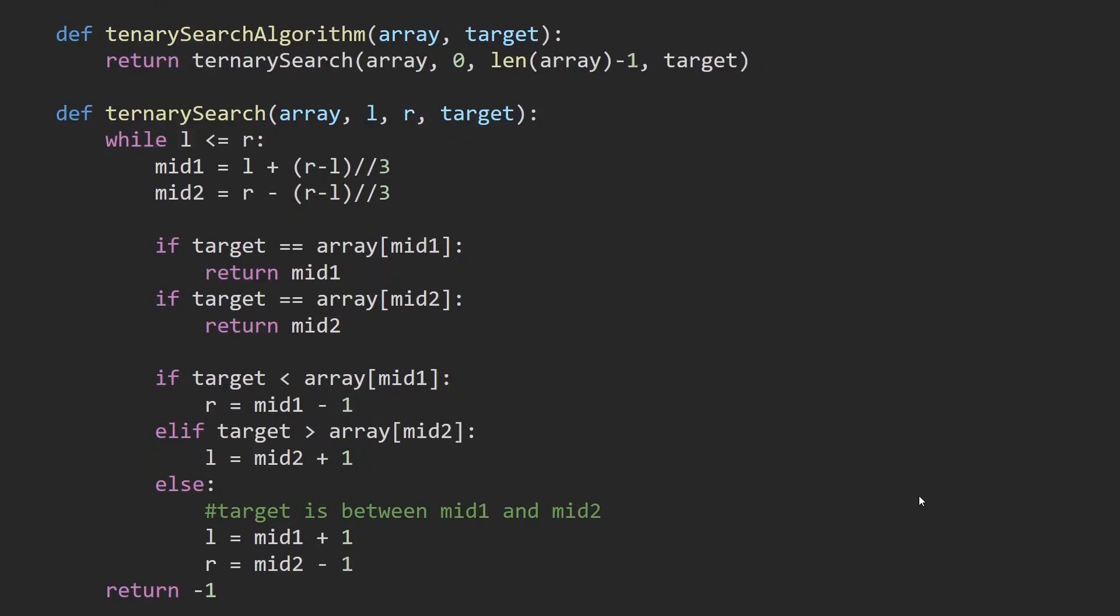Let's take a look at the Python code. So we put l at index 0 and r at the end of the array. And as long as l is less than or equal to r, we calculate the mid1 and mid2 indexes. Then we look into the array content at m1 and m2.